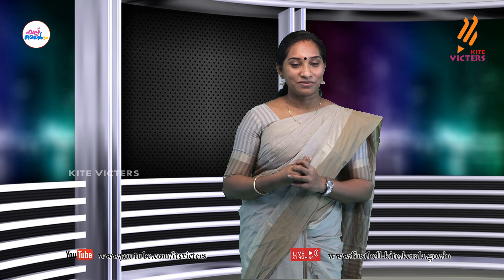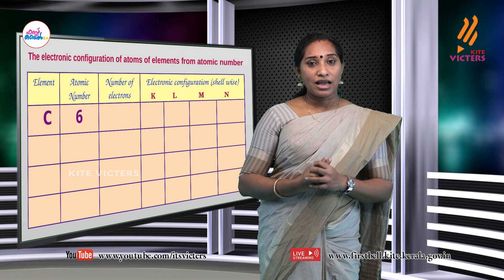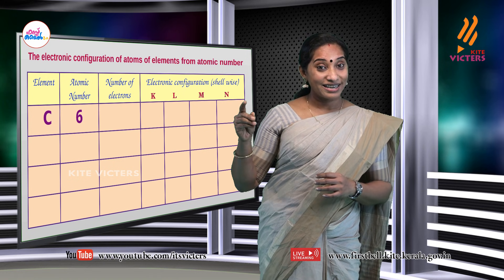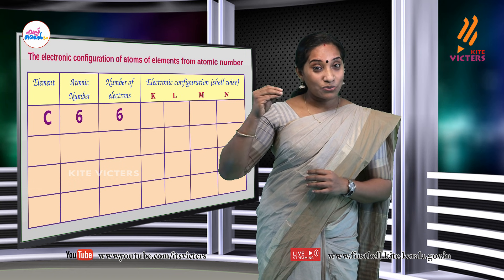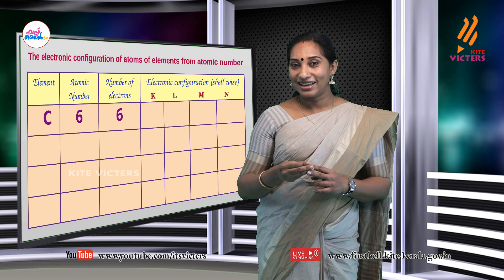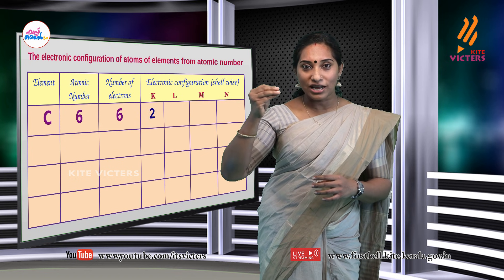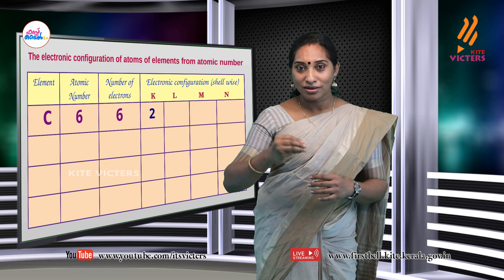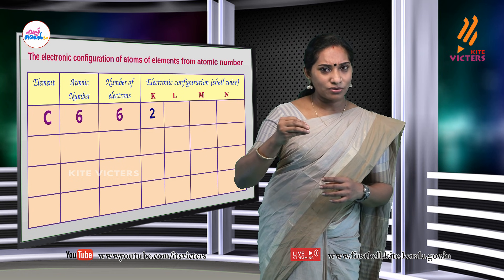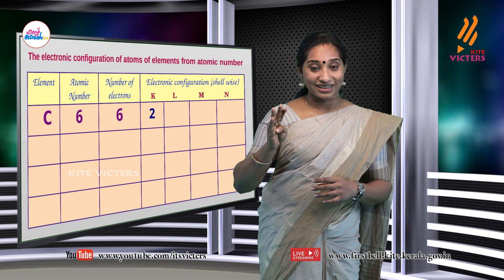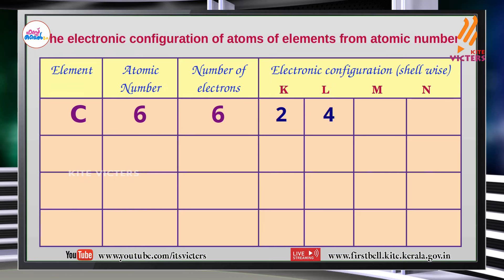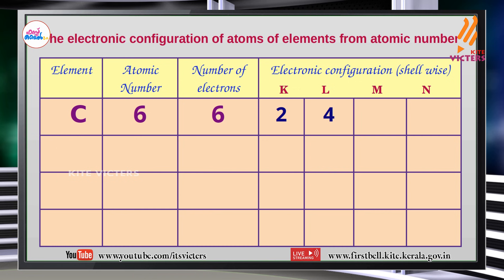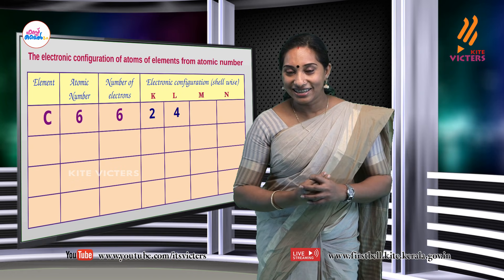Electronic configuration is the arrangement or distribution of electrons in an atom. If the atomic number is given, we can find the electronic configuration. Let's do some examples. Take carbon atom — its atomic number is 6. The first 2 electrons will move to K shell, because it is the lowest energy shell. Then among the 6 electrons, only 4 are left, and those 4 electrons move to the next energy level, L. So the electronic configuration of carbon is 2, 4.